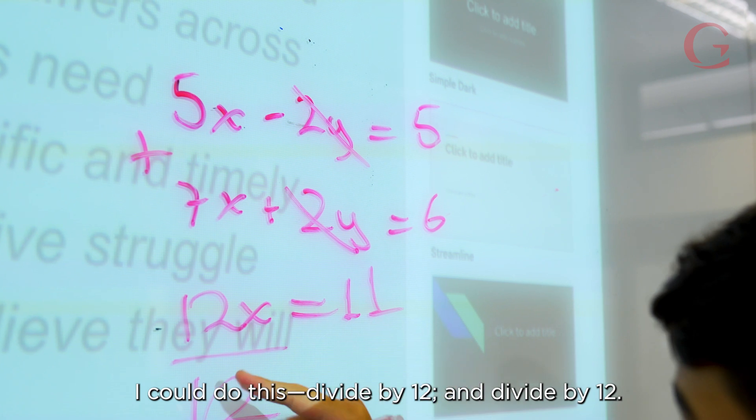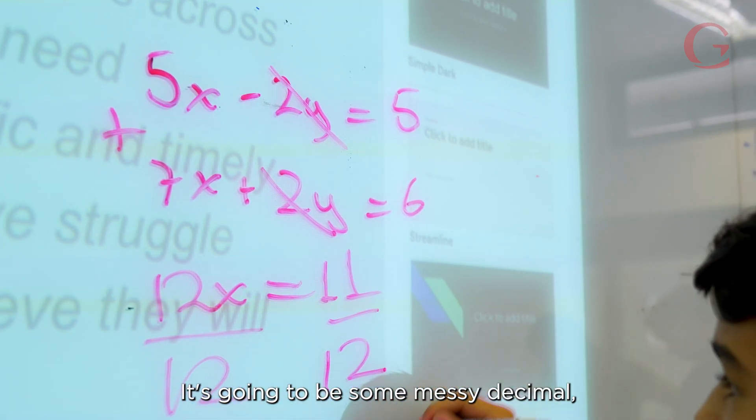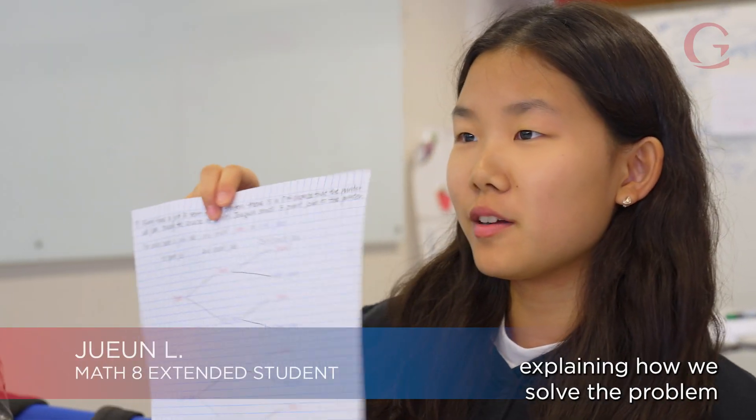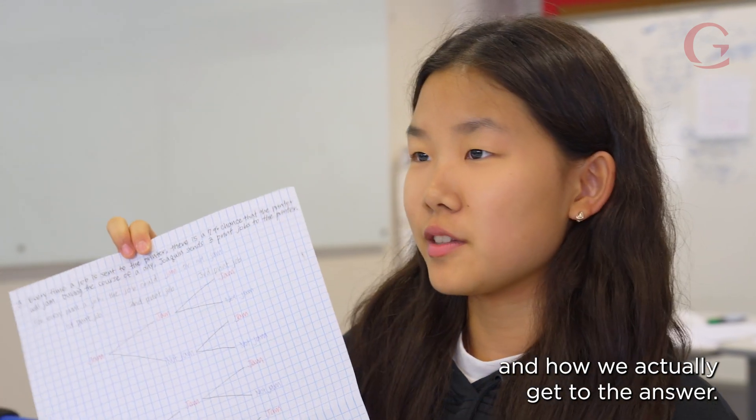I could do this, divide by 12 and divide by 12. It's going to be some messy decimal, but that's how you do it. Here we're making this model explaining how we solve the problem and how we actually get to the answer, not just getting the answer.